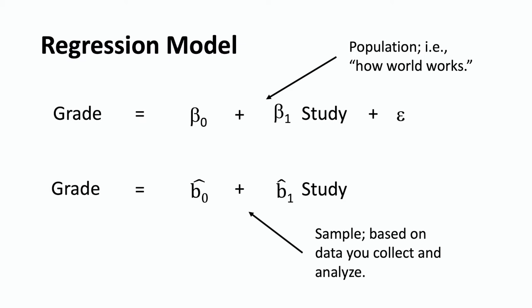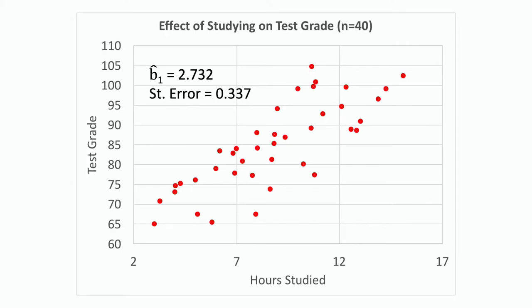You have the population regression model, which is our best idea of how we think the world works, and then below it you see a sample regression model, which is based on some data that we can actually collect and analyze. The scatter plot shows data for a sample of 40 students. You have the test grade, which is the dependent variable, on the y-axis, and the number of hours studied is shown on the x-axis.